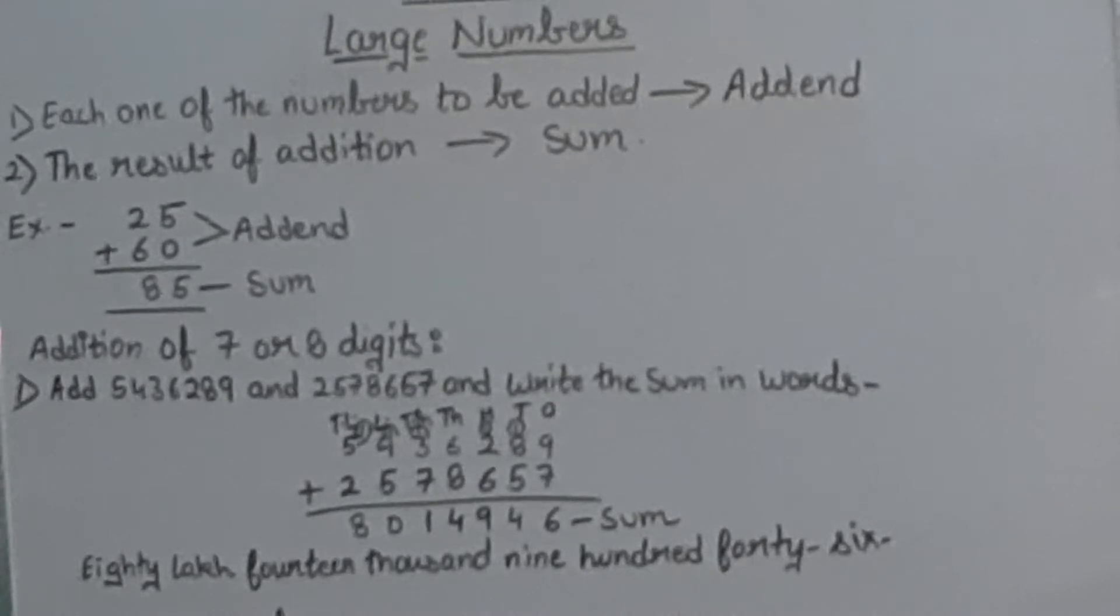Six in sixteen is at the right hand side, so write down six and carry the one above eight. Now eight plus five is thirteen, plus one is fourteen. Write down four and carry one. In the same way, keep adding with the carry. We'll get 8014946.